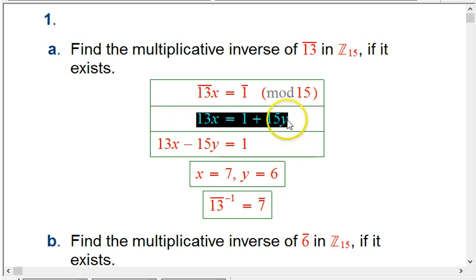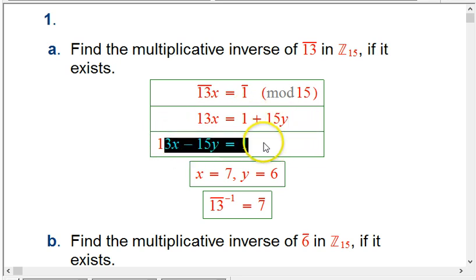We're trying to transition more and more to working entirely within the mod world because it's more powerful, more sophisticated, and leads to some of the great stuff about encryption, for example. But when we have to, when we're stuck, we can go back to ordinary integers. This is what it means for 13 times x to be congruent to 1 mod 15. There's some y that makes this work. We move everything on one side.